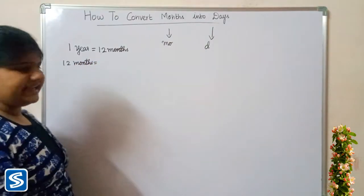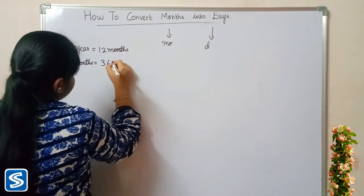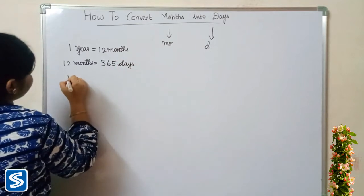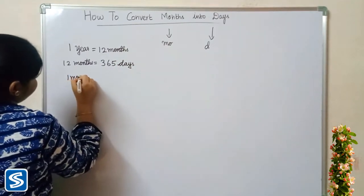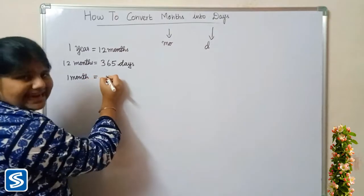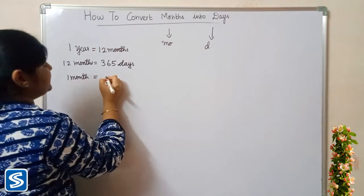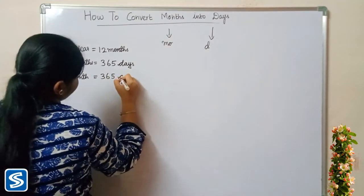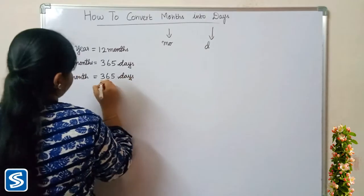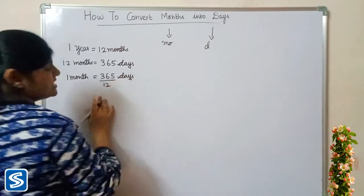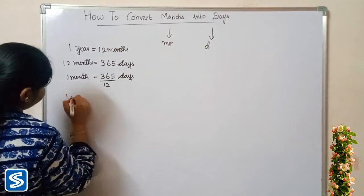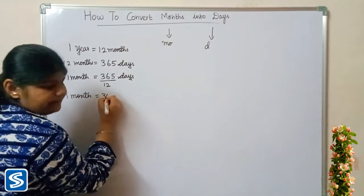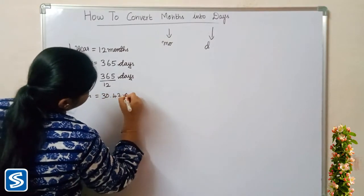12 months is equal to 365 days. One month is equal to 365 days divided by 12, so one month is equal to 30.42 days.